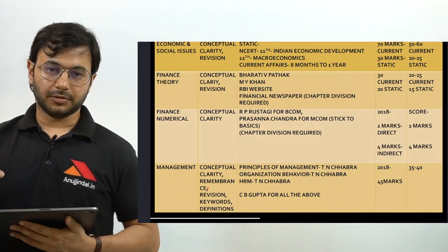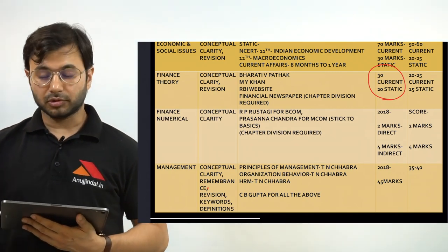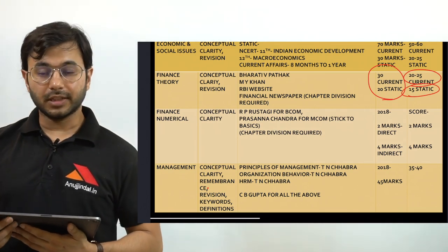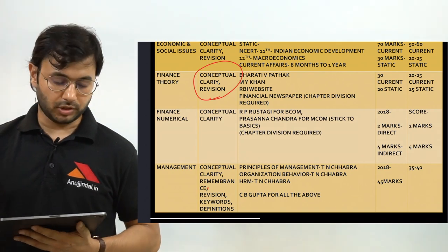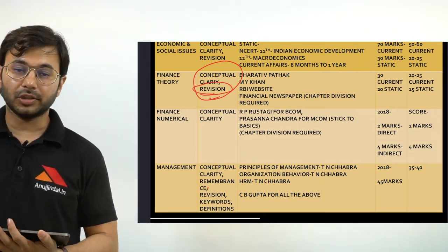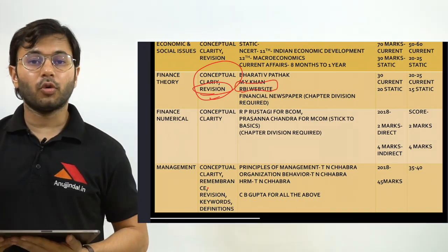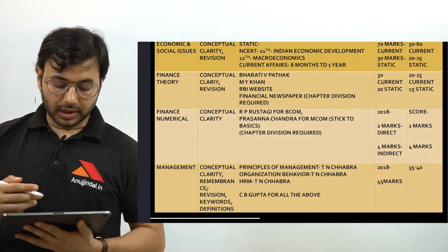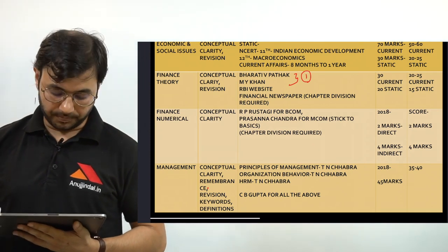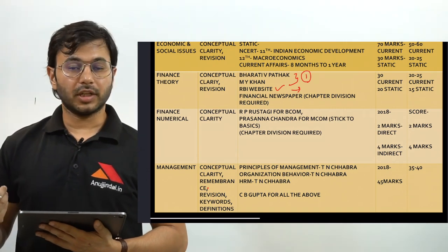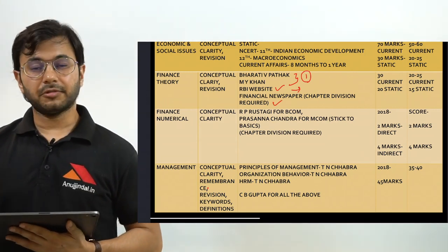Finance and Management is divided into three parts: finance theory, finance numerical and management. Finance theory has a total weightage of 50 marks, of which 30 comes from current affairs and about 20 from static. You can score 20 to 25 in current and 15 in the static portion. The focus of finance theory is conceptual clarity and revision. For syllabus coverage, any one of these two books — Bharti Vipatak or M.Y. Khan — can be followed. RBI website needs to be covered regularly; covering it monthly is good enough, and any one financial newspaper does the job.